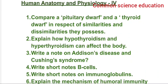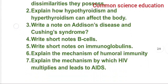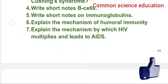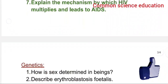Write a short note on B cells. Write a short note on immunoglobulins. Explain the mechanism of humoral immunity. Explain the mechanism by which HIV multiplies and leads to AIDS. Next, for genetics, how is sex determined in human beings?